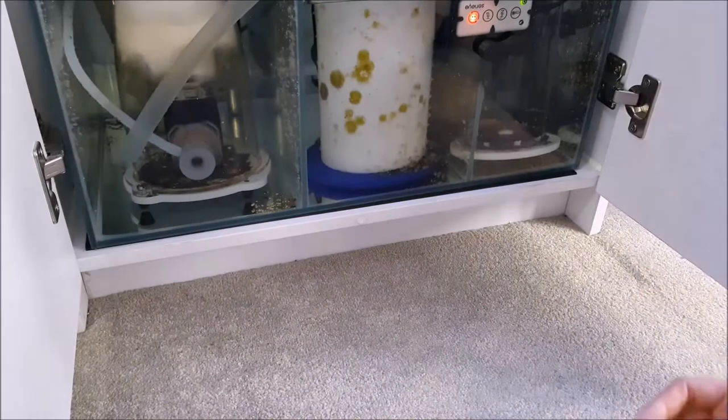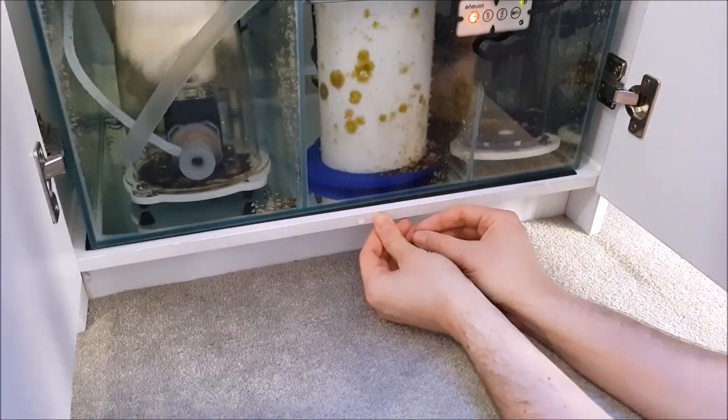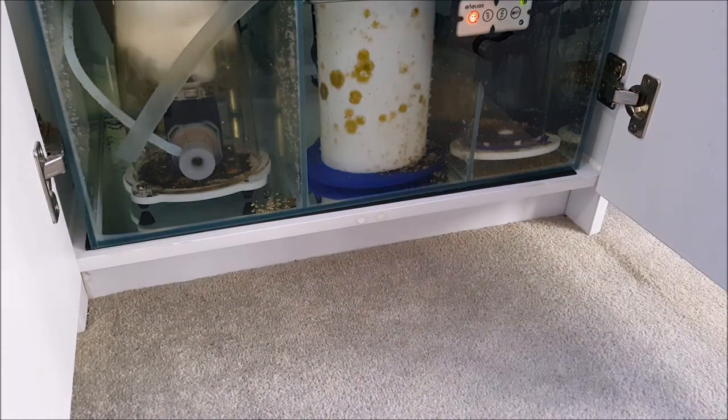So you just locate the sweet spot where the door hits the cabinet and firmly push the stoppers onto the offending area for each door. They're tiny and transparent so they won't ruin your nice white gloss aesthetic.